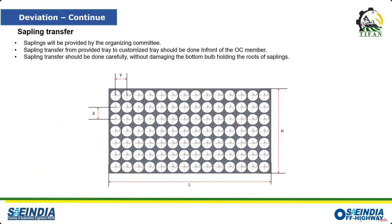If you are opting for the customized tray, you have both options: you can go with the tray which the TIFAN organizing committee will provide, or bring your own customized tray. We'll give you our tray of saplings and you can transfer those saplings into your customized tray and put it on the implement. Placing the tray on the implement does not count as manual intervention. The implement should be capable of carrying at least two working trays and two backup trays — four trays total.